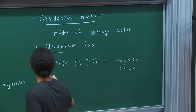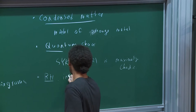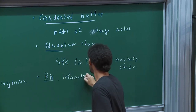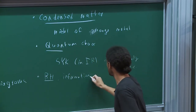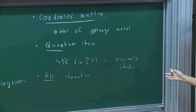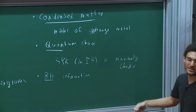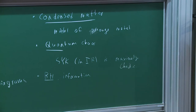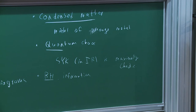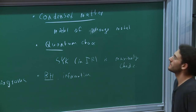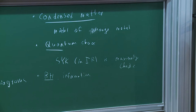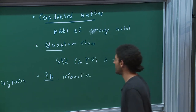Finally, black hole information. The reason it's interesting that SYK is maximally chaotic is that if one computes the same quantity — the out-of-time-order four-point function — in a black hole background in Einstein gravity, one also finds the Lyapunov exponent is maximal. This was some of the original motivation that SYK is a good model for a black hole.